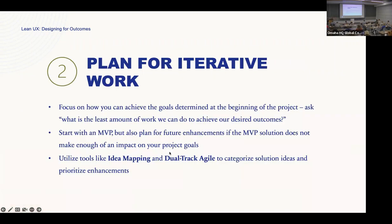The second way to begin practicing Lean UX is to start planning for iterative work. Focus on how you can achieve the goals determined at the beginning of the project. Ask yourself: what's the least amount of work we can do to achieve our desired outcomes? Start with an MVP and plan for future enhancements in case the MVP doesn't meet your solution goals. You can also utilize tools like Idea Mapping and Dual Track Agile to categorize solution ideas and prioritize your enhancements.